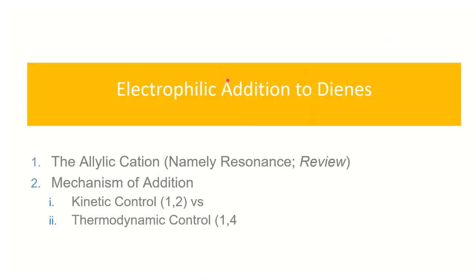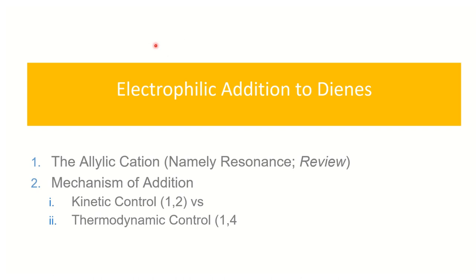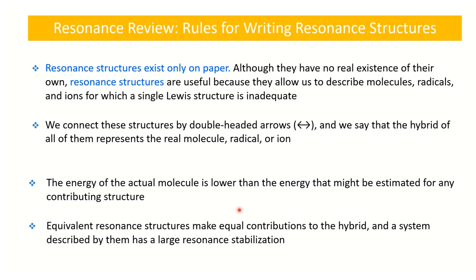Now we get to the main thrust of this section: electrophilic addition to conjugated dienes. I want to briefly look at allylic systems, and there is a section on resonance in the handout which I expect you to review. I'll continue talking about the mechanism of this addition, specifically the two possible products: that which is under kinetic control and that which is under thermodynamic control.